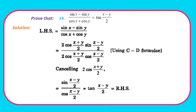Question 18: Prove (sinx − siny)/(cosx + cosy) = tan((x−y)/2). Taking the LHS: applying sinC − sinD in the numerator gives 2cos((x+y)/2)sin((x−y)/2), and cosC + cosD in the denominator gives 2cos((x+y)/2)cos((x−y)/2). The 2cos((x+y)/2) terms cancel, leaving sin((x−y)/2)/cos((x−y)/2) = tan((x−y)/2), which is our RHS. Hence proved. Pause and note down the solution.